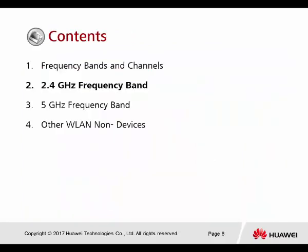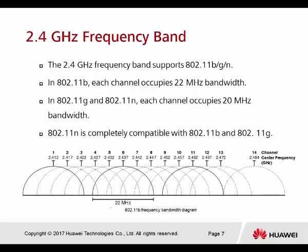Now discussing the 2.4 GHz frequency band, which supports 802.11 B, G, and N. In 802.11B, each channel occupies 20 MHz bandwidth. Every single channel only occupies 5 MHz, but because of wider coverage requirements, one channel uses some adjacent channels at the same time, resulting in a 20 MHz usage.